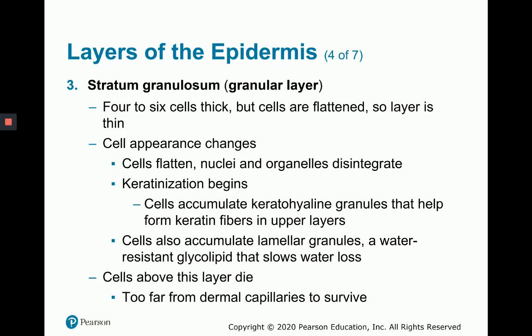Moving upward into the stratum granulosum, the granular layer: it is four to six cell layers thick, but the cells are flattened, showing a more squamous shape. The nuclei and organelles are starting to disintegrate — the cells are beginning to die — but they are accumulating keratin. They accumulate keratohyalin granules, which help form keratin fibers as the cells move closer to the corneal layer, and lamellar granules, a water-resistant glycolipid that slows water loss, especially notable in the stratum lucidum above.